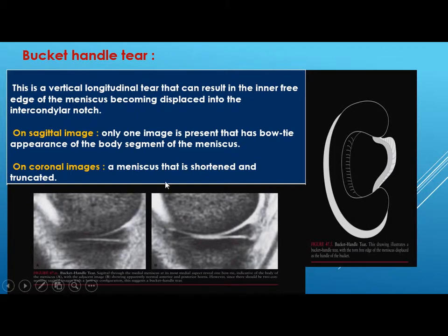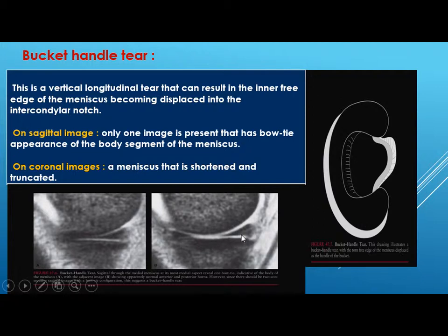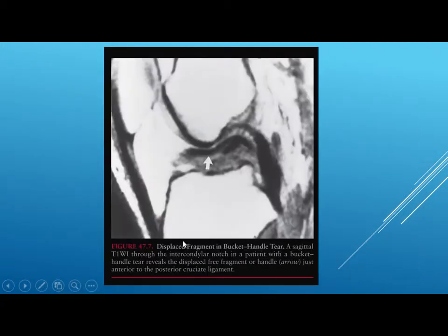On coronal images, a meniscus that is shortened and truncated is seen. You should look for bow-tie appearance on two consecutive slices — if only one is seen, that is a bucket handle tear. On the sagittal image you will also see a displaced fragment in the intercondylar notch — this is the displaced fragment, the handle. It is called double PCL because you see two PCLs.